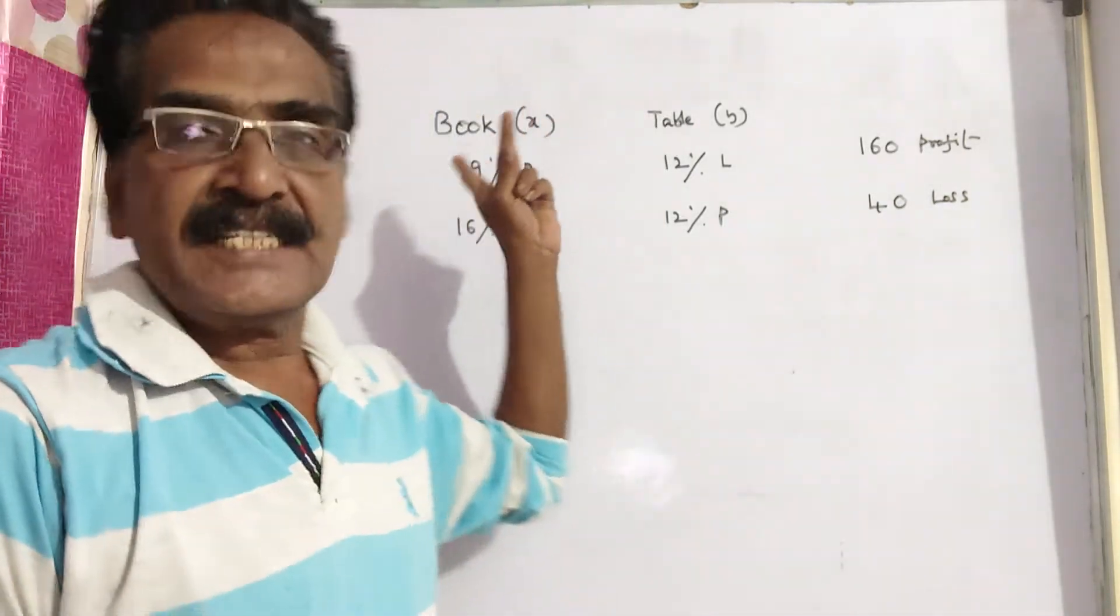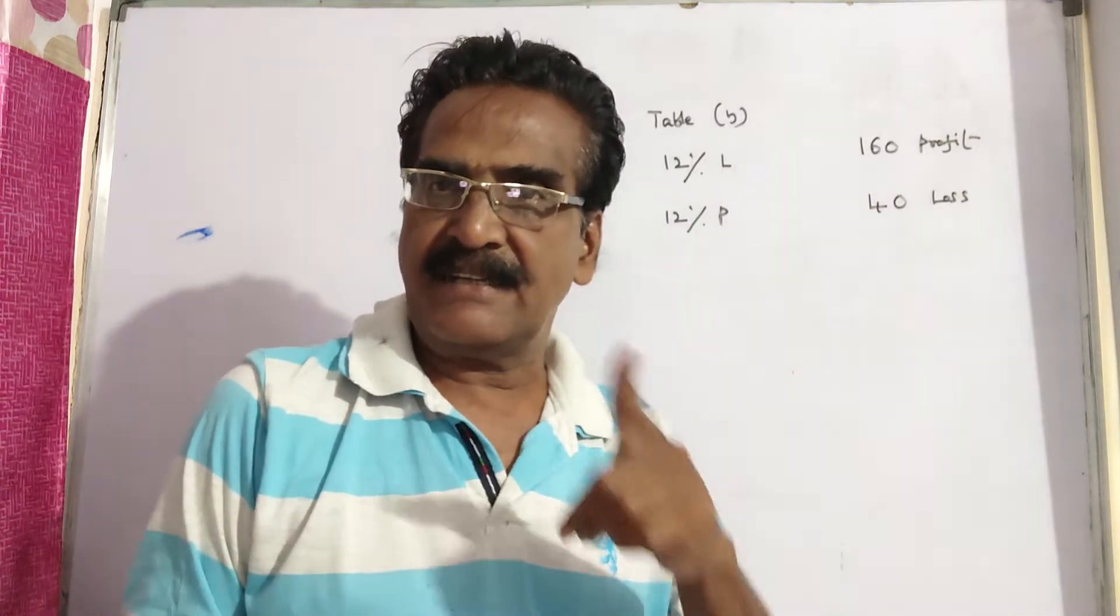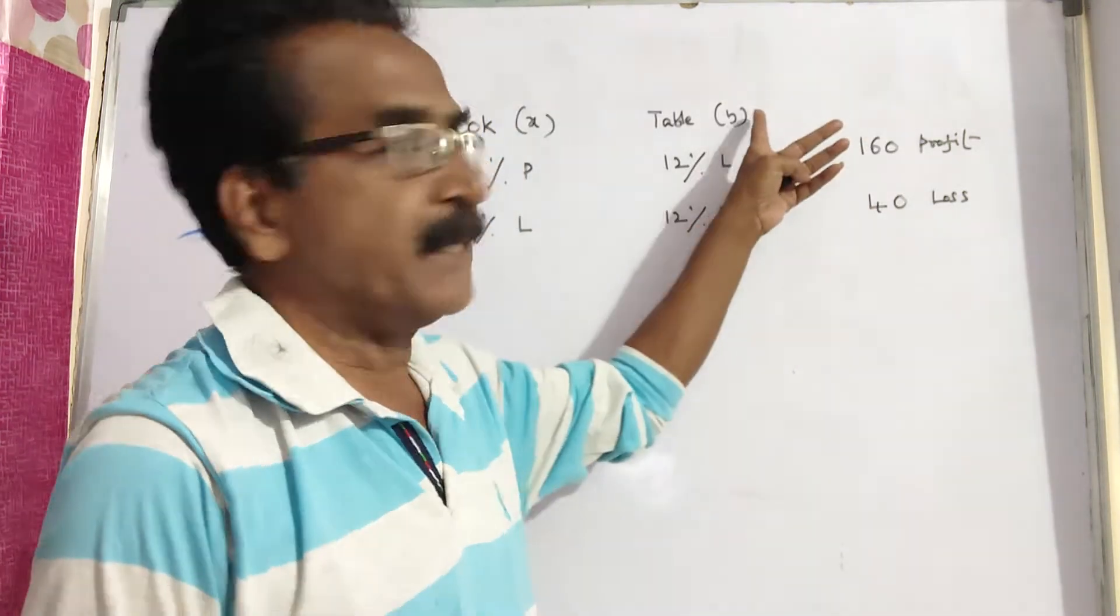The problem is given in the description box. Say the price of the book is X and the price of the table is Y.